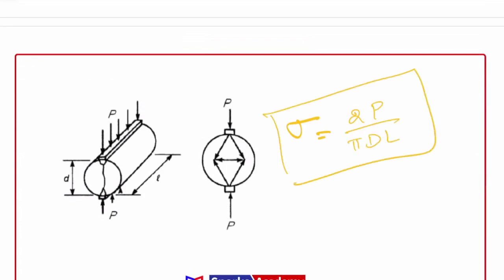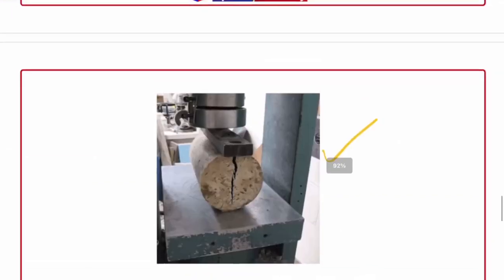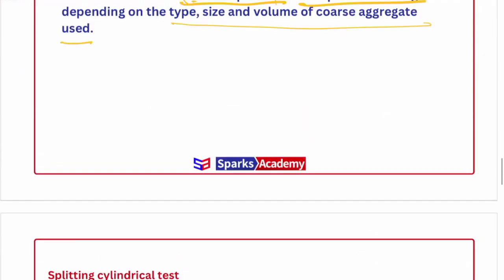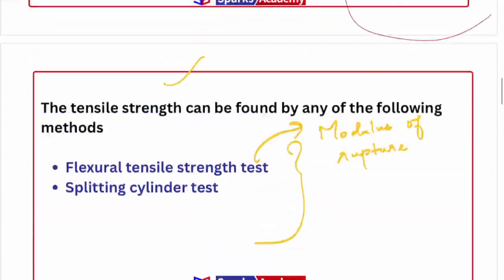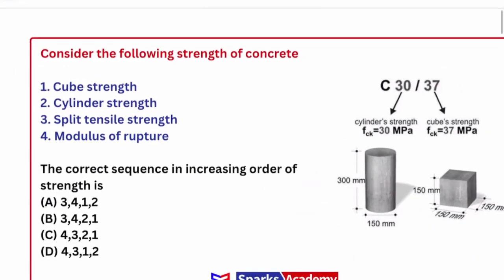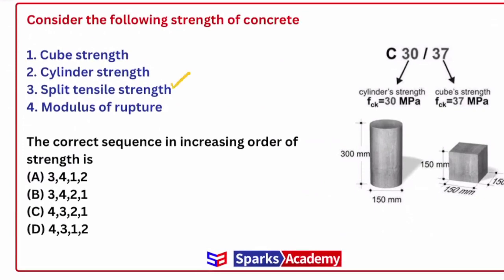Keep this formula — questions have a good chance of being asked from this. Now let's compare split tensile and modulus of rupture. If you compare these two, the load is very low in the split tensile (splitting cylinder test), so split tensile strength is low. That means: split tensile strength < modulus of rupture, and these are both tensile strengths, which means cylinder strength and then cube strength come above. So the increasing order is: split tensile → modulus of rupture → cylinder → cube. Option B is the right answer for this question.